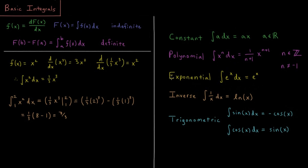The simplest integral you can possibly do is exponentials — exponentials are their own derivatives and also their own integrals, so the integral of e to the x is equal to e to the x. There is a special case for polynomials where you have 1 over x: just as the derivative of natural log was 1 over x, the integral of 1 over x is the natural log of x — an exception to the polynomial rule. Finally, for trigonometric functions: where the derivative of sine was cosine and the derivative of cosine was negative sine, the integral of cosine is sine, and the integral of sine is negative cosine.